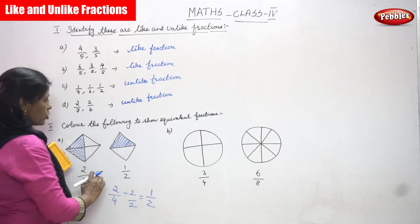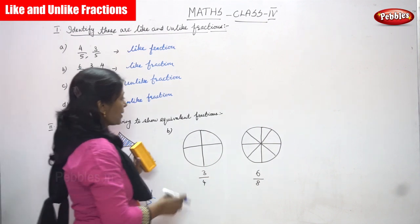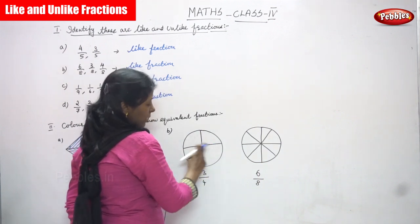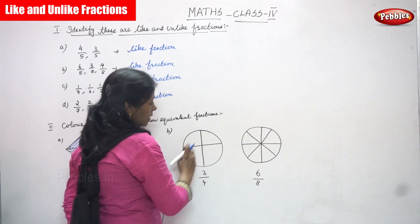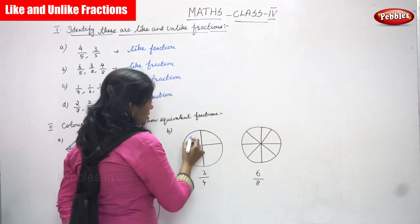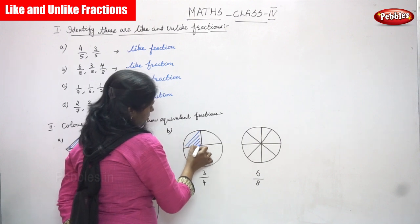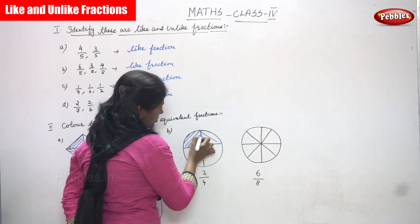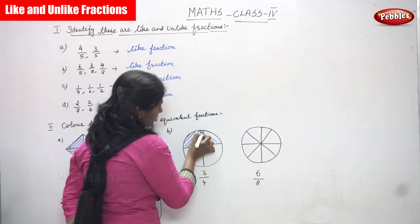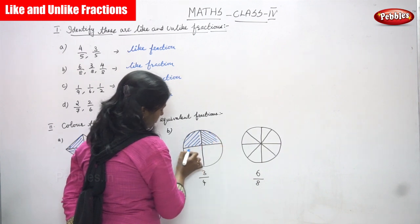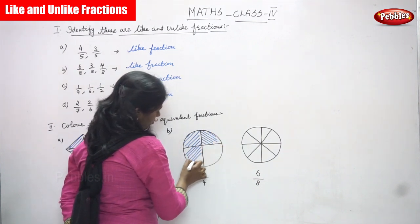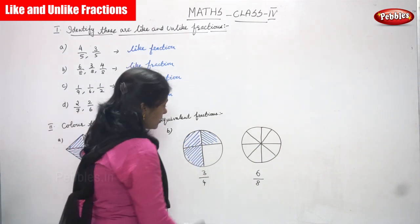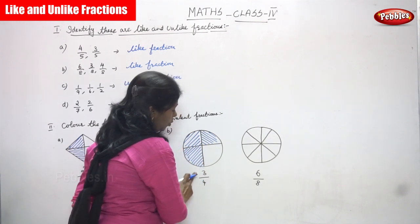I have shaded the portion in different colors. Next one is 3 by 4 — it is a whole circle. I cut it into 4 equal parts. Now I am going to shade only 3 portions. So 3 by 4: the whole part is 4, but I shaded only the 3 portions.